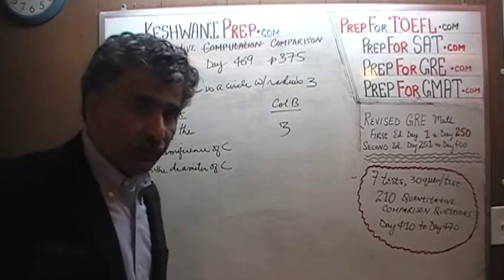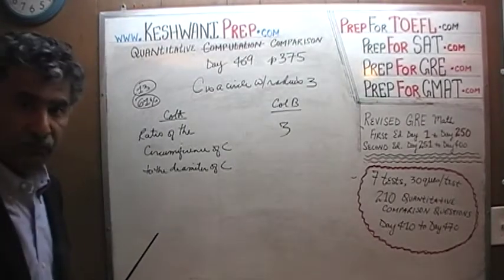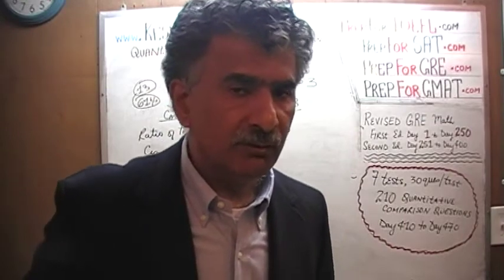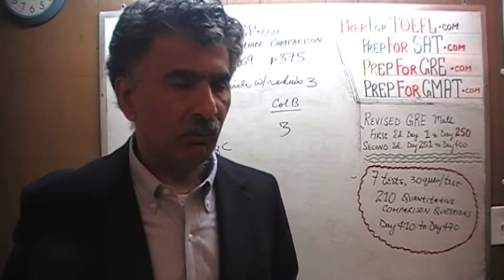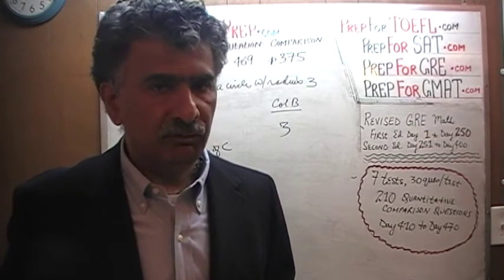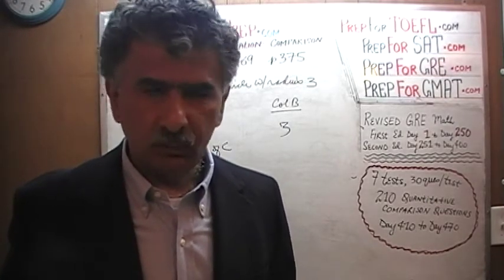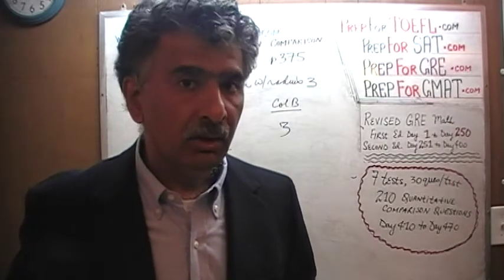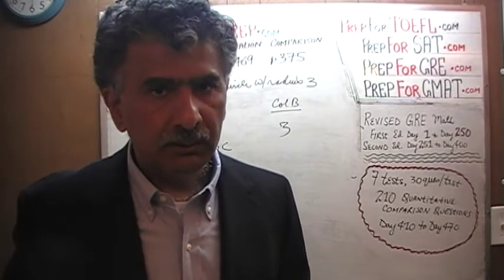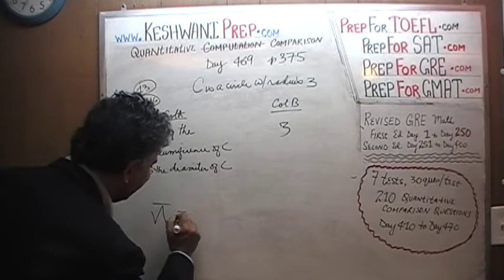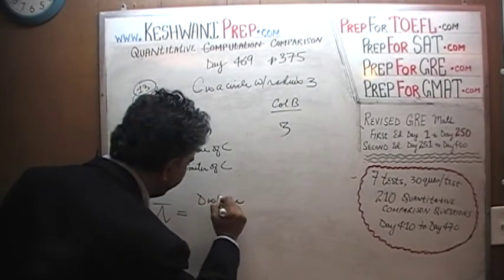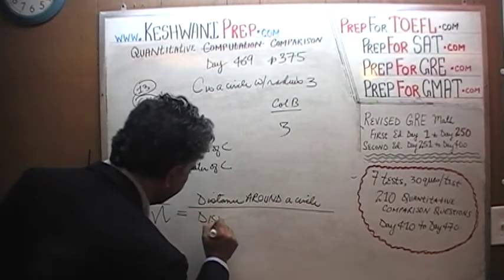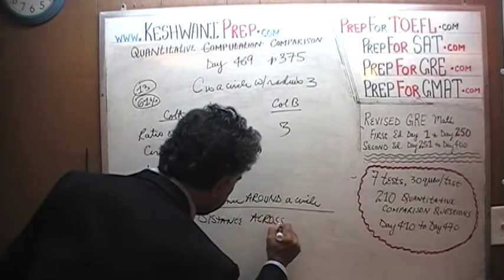Before we look at the problem, here is the question I want to ask you: what is the definition of pi? I am not asking you what it equals to — most people will say 3.14. I am asking you what is it conceptually. Pi is simply the ratio of distance around the circle over the distance across the circle.